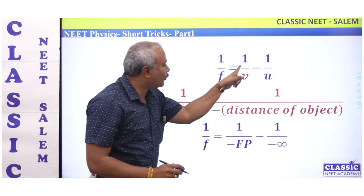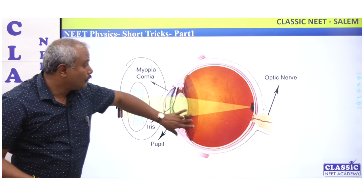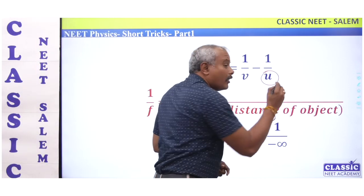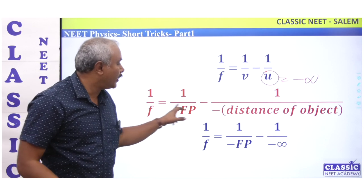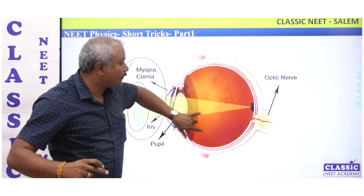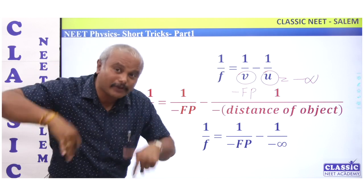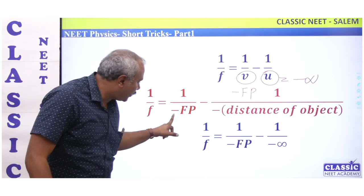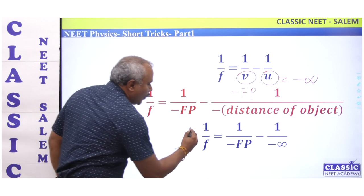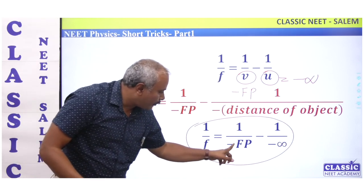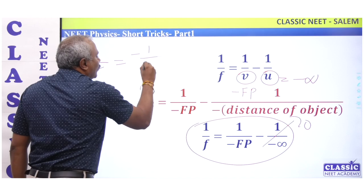What is the formula? 1/f = 1/v − 1/u. The object is at minus infinity, so 1/u = 0. The image is formed at v = minus far point — the defective person's far point. So: 1/f = 1/(−far point) − 1/(−infinity), which gives 1/f = −1/far point.